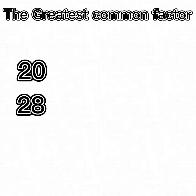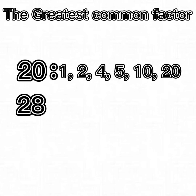Here's another method to find the GCF. We're going to list all of the factors for 20. The factors of 20 are 1, 2, 4, 5, 10, and 20.